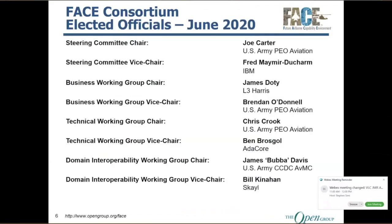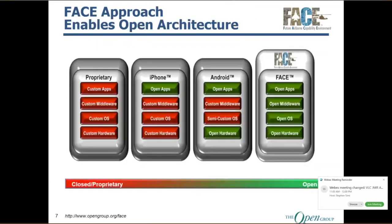The elected officers today — committee chair and vice chair — are Joe Carter from Army and Fred Miramire from IBM. Business working group: James Doty from L3 Harris and Brendan O'Donnell from PEO Aviation. Technical working group chair and vice chair are Chris Crook from Army PEO Aviation and Ben Brosgall from AdaCore. For the domain interoperability working group, you've got Bubba Davis and myself, Bill Kinnehan.